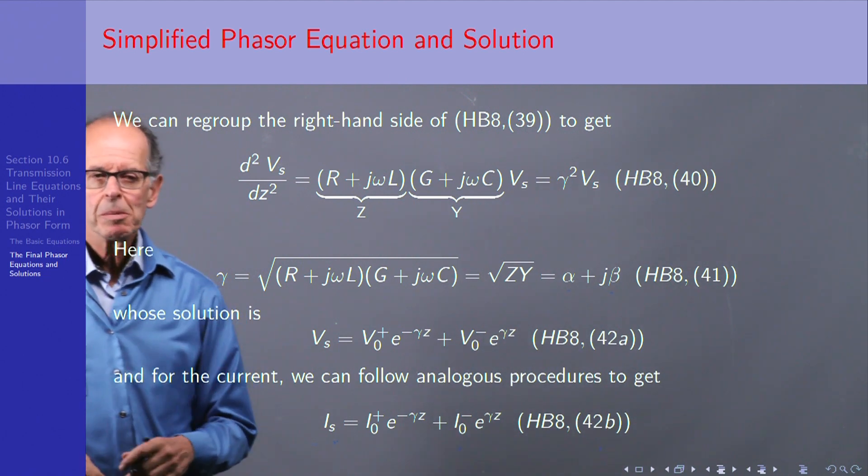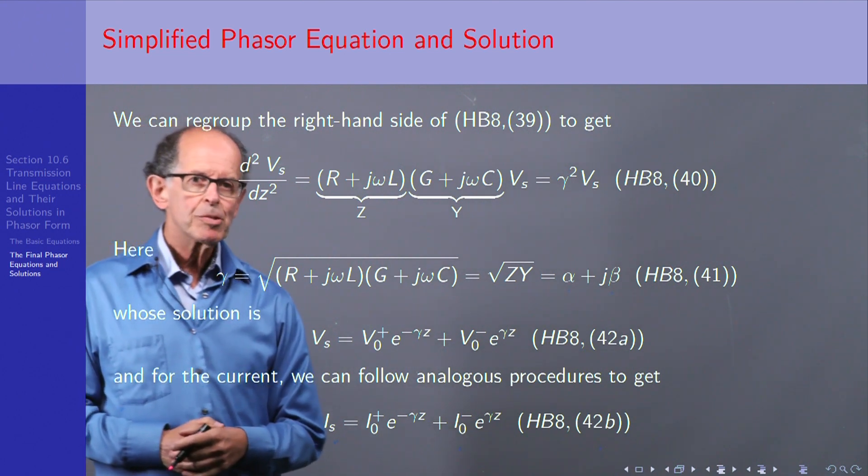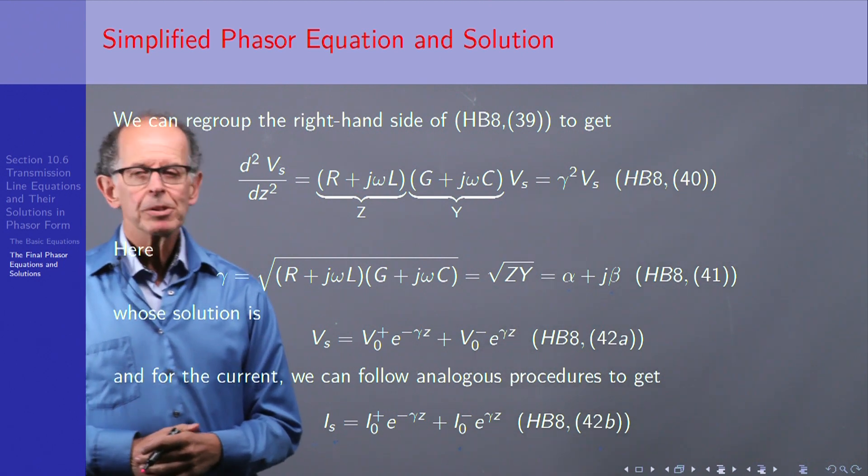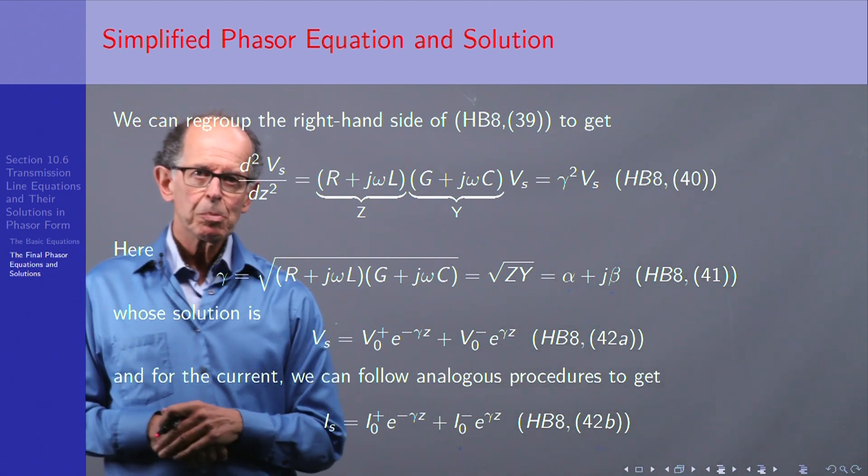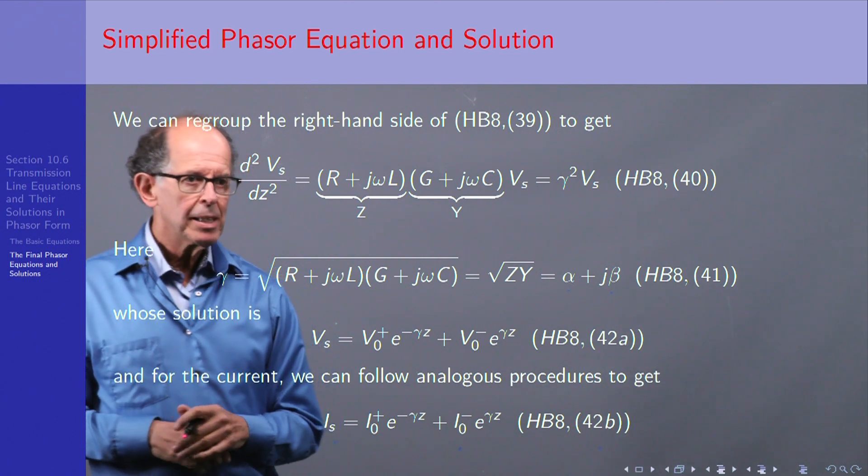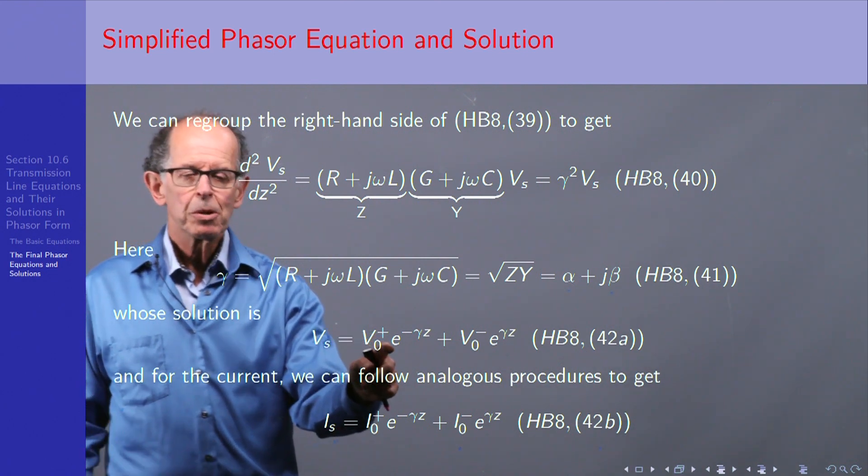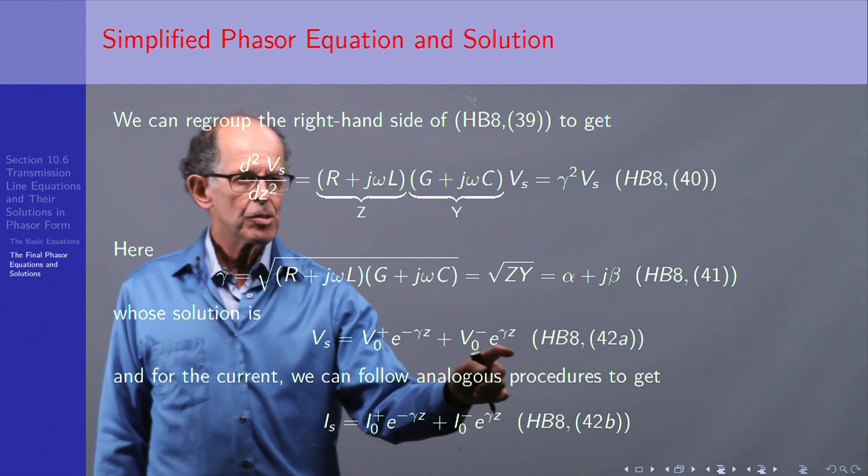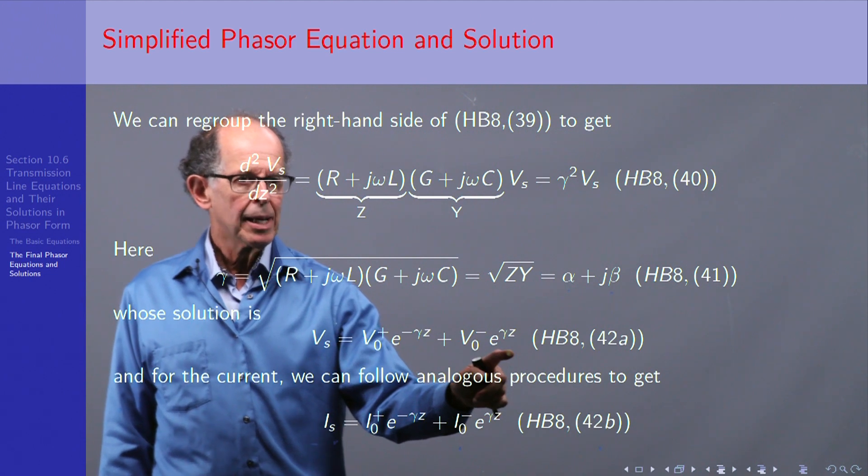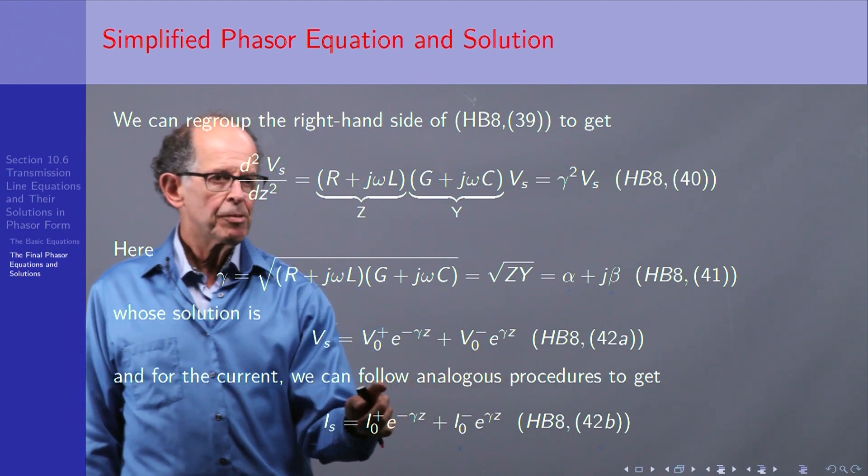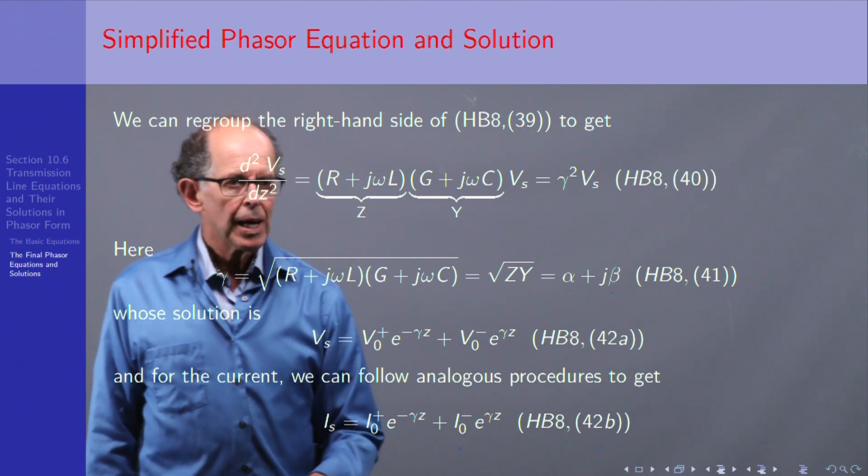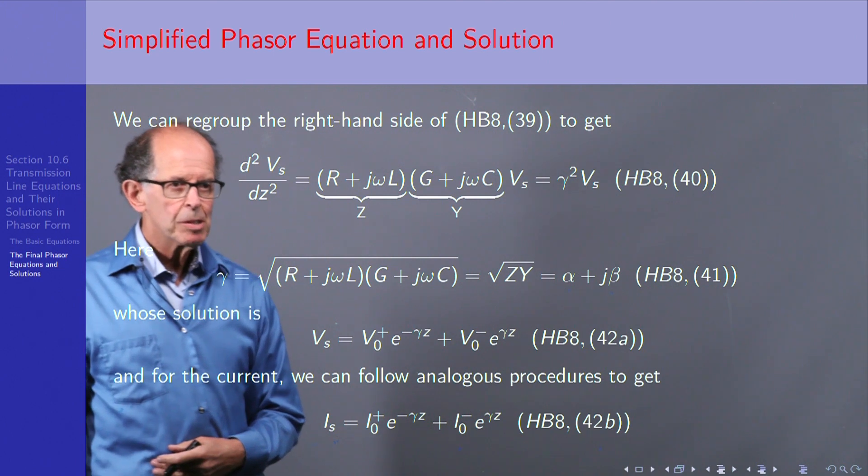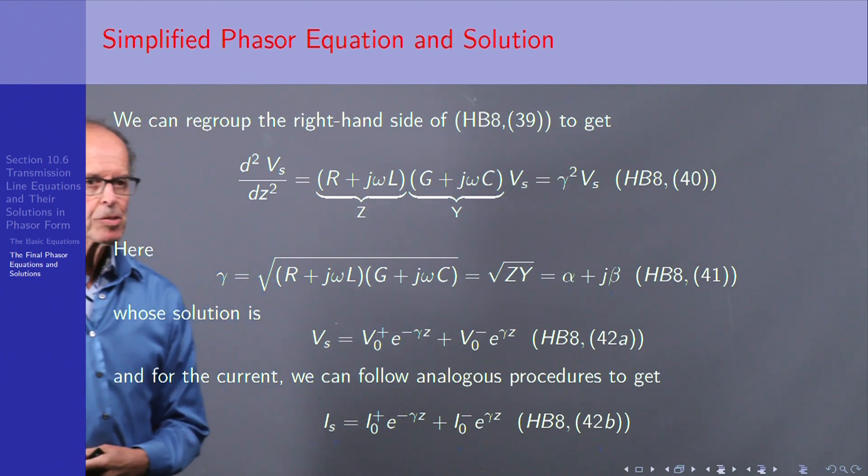Well, the solution of 40 is simple exponentials, e to the plus or minus γz. And the first term has an amplitude V₀⁺ times exponential e to the minus γz. So that's a wave traveling to the right or down towards the load. And this is the wave reflected back. And we have the same for the current as shown here. Now what we can do is look at this in more detail in the following slide.